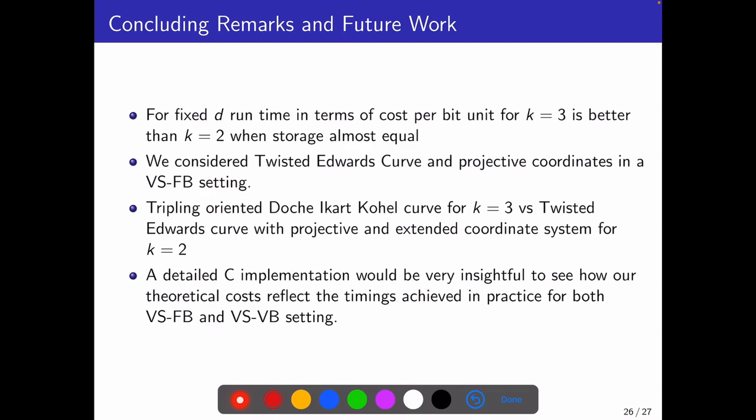So we can say in the conclusion, the regular nature of our algorithm can make them resistant against timing attacks. We consider twisted Edwards curves and projective coordinates in our scalar multiplication algorithm. But a good comparison can be done when we take tripling oriented DIK curve for k equals 3 setting, while on the other hand, twisted Edwards curves with the mix up of projective and extended coordinate system for k equals 2. And a detailed C implementation will also be very insightful to see how our theoretical costs reflect the timing achieved from both variable scalar fixed base and variable scalar variable base setting.